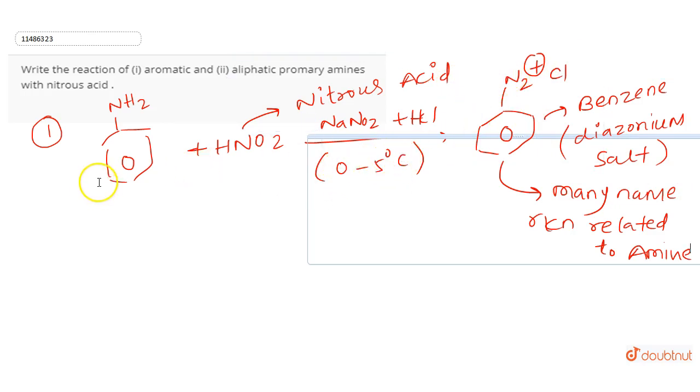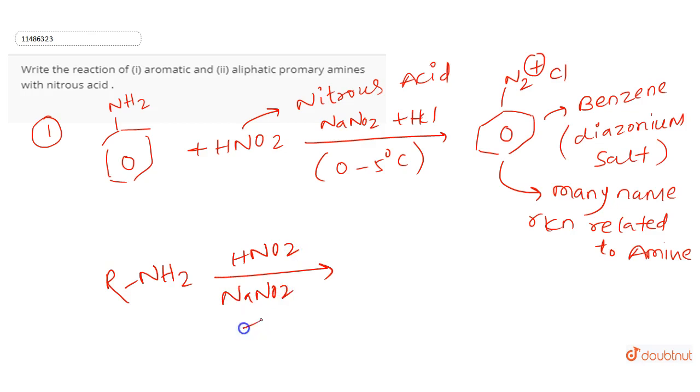But in the case of aliphatic amine, there is no benzene ring, and it is not as stable as aromatic amine. When aliphatic amine reacts with HNO2 in the presence of NaN2 plus HCl, it converts